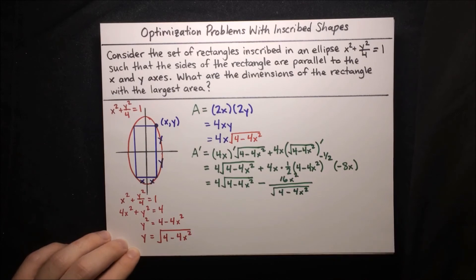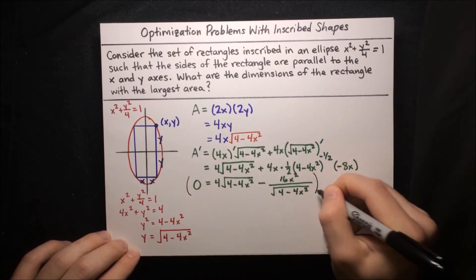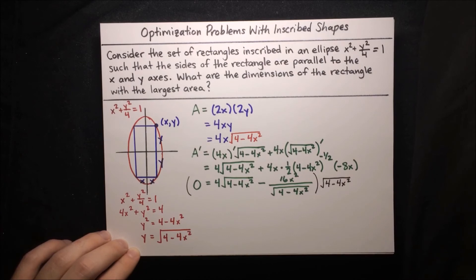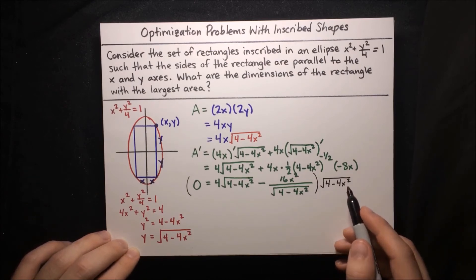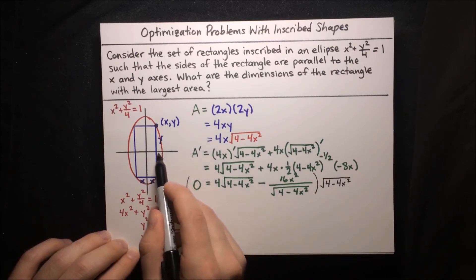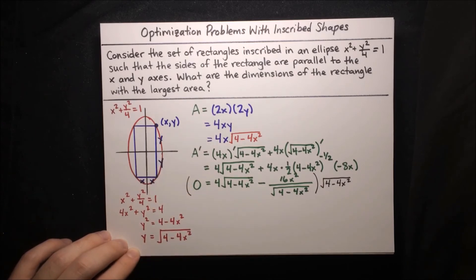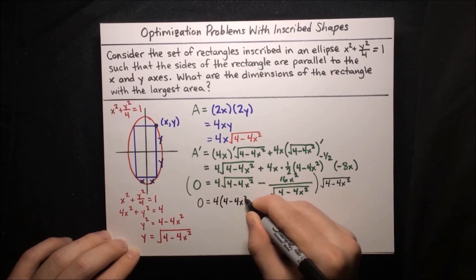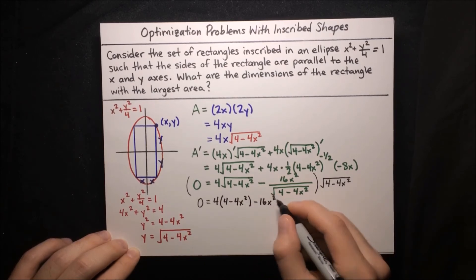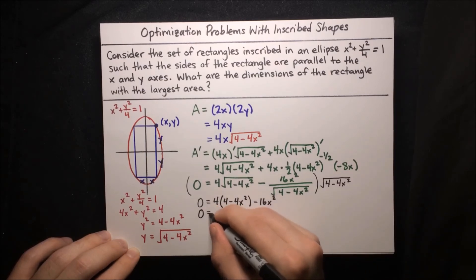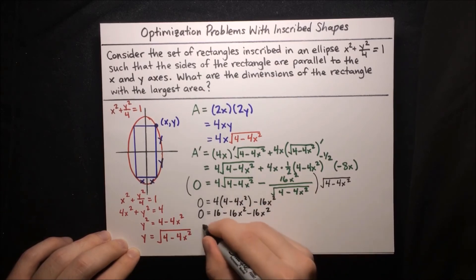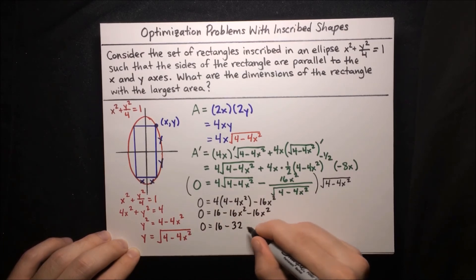To find the stationary points, we set that derivative equal to zero. We multiply through by the square root of 4 minus 4x squared to clean up the equation — we know we're allowed to do that because x can never equal 1, since that would just give a line segment across the ellipse. Simplifying gives zero equals 4 times (4 minus 4x squared) minus 16x squared, which expands to zero equals 16 minus 16x squared minus 16x squared, so zero equals 16 minus 32x squared.